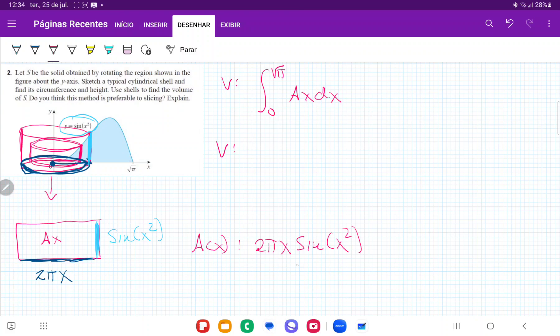Therefore my volume is equal to, I'm going to put my pi outside because it's a constant, the integral from 0 to root pi of 2x times sine of x squared dx.